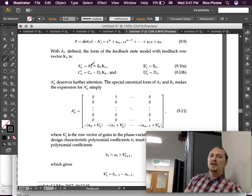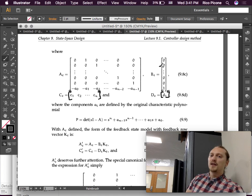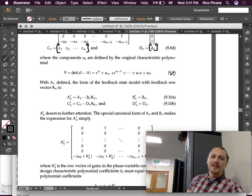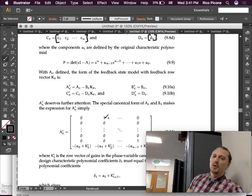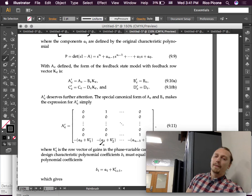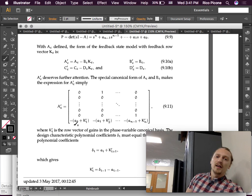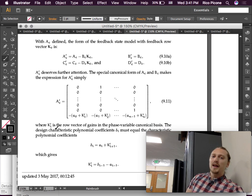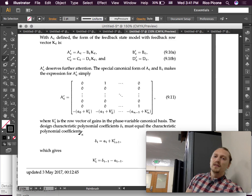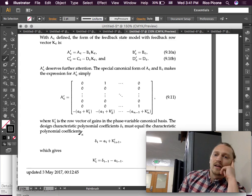AC prime deserves further attention. The special canonical form of AC and BC makes the expression for AC prime simply this. So, if you compute this, notice that AC, most of AC is just zeros and ones. All of these are zeros and ones. And they're multiplying all of this stuff up here, which all these B's are zeros. So, that's all pretty much irrelevant what's happening up there except for there's one, one each row. All the way down to the very end. And at the very end, we have a row that has a K value and one of these A values, one of these coefficients. Where KI prime is the row vector of gains in the phase variable canonical basis.